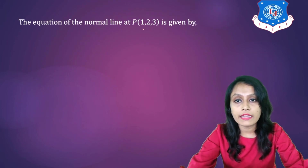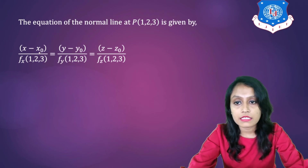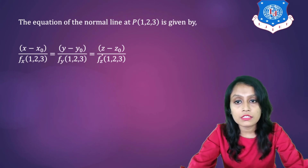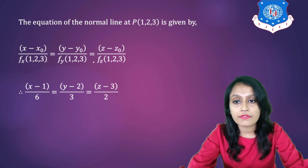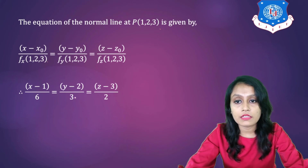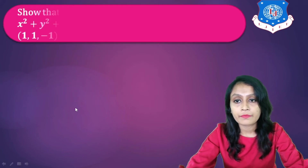Now the equation of normal line at point (1, 2, 3) is given by: (x − x₀) / Fx = (y − y₀) / Fy = (z − z₀) / Fz at (1, 2, 3). Substituting x₀ = 1, y₀ = 2, z₀ = 3 and Fx = 6, Fy = 3, Fz = 2, we get: (x − 1) / 6 = (y − 2) / 3 = (z − 3) / 2. This is the equation of the normal line.